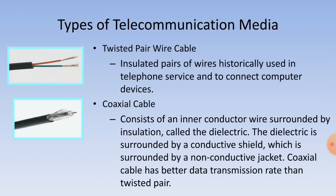Types of telecommunication media: Twisted-pair wire cable (TPWC) consists of insulated pairs of wires historically used in telephone networks and to connect computer devices. Coaxial cable consists of an inner conductor wire surrounded by insulation called the dielectric, which is surrounded by a conductive shield, itself surrounded by a non-conductive jacket. Coaxial cable has a better data transmission rate than twisted-pair.